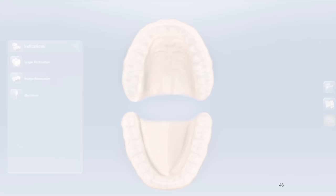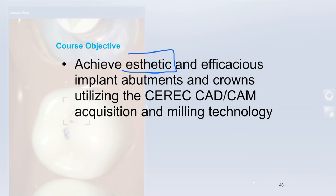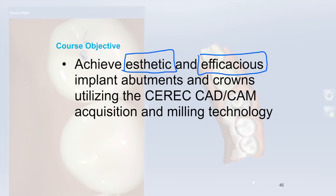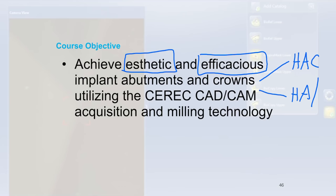Let's go back to our course objectives. This is our third objective and the one that takes the most time — actually making the restoration. We're talking about achieving aesthetic and functional implant abutments and crowns. We have two types: the hybrid abutment crown as a single unit, and then the hybrid abutment with a separate crown. We'll talk about and demonstrate both.